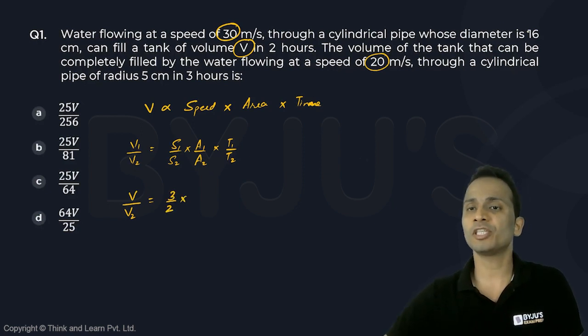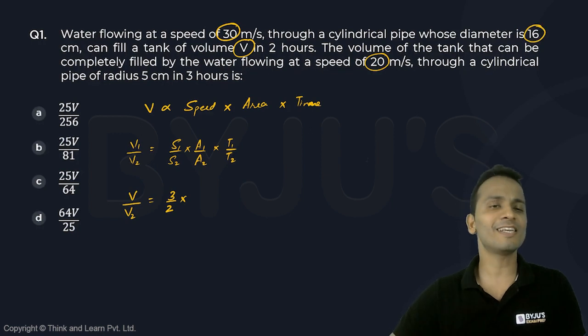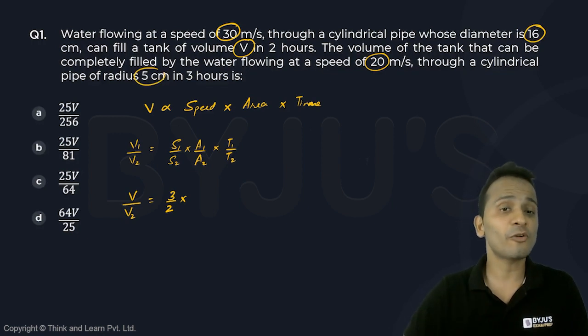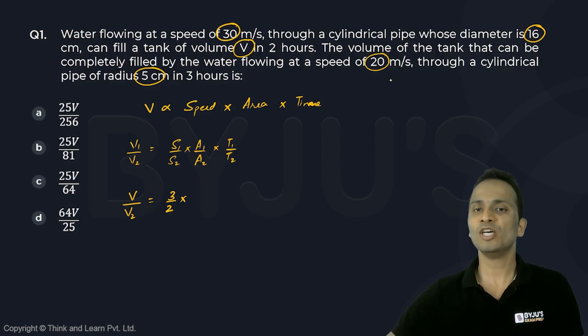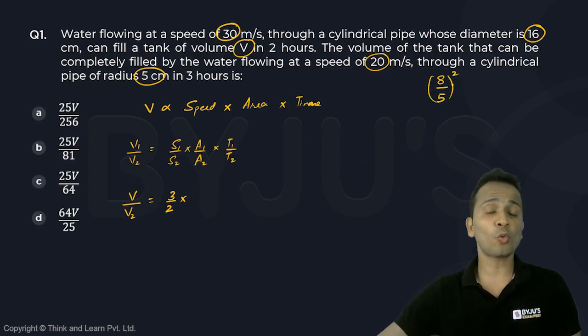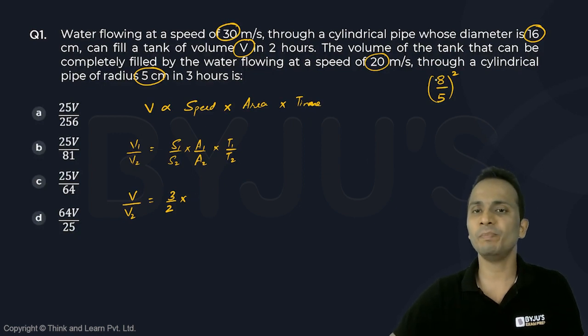For the area of cross-section, in the first case the diameter is given as 16, and in the second case radius is given as 5. If I convert both in terms of radius, the radius of the first pipe will be 8 and the radius of the second pipe is 5. Now area is basically proportional to the square of the radius, so the ratio of areas will be 8 square upon 5 square, that is 64 upon 25.